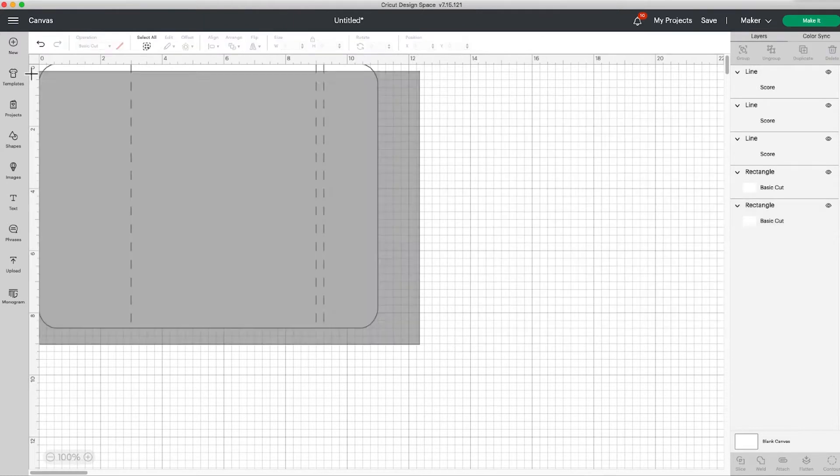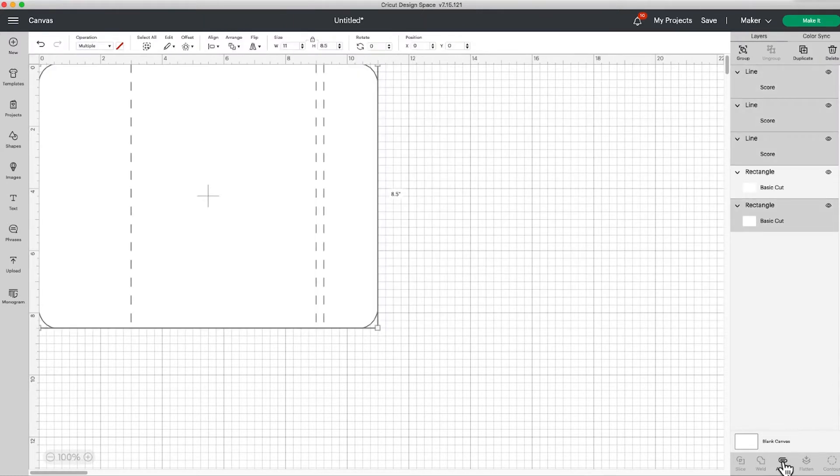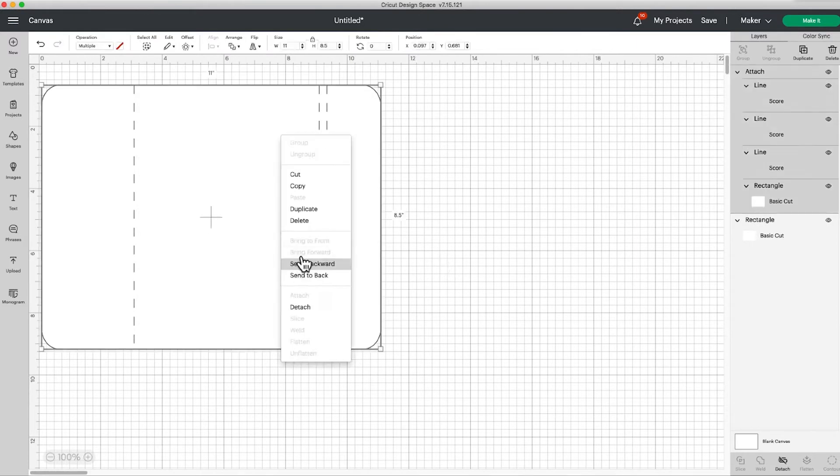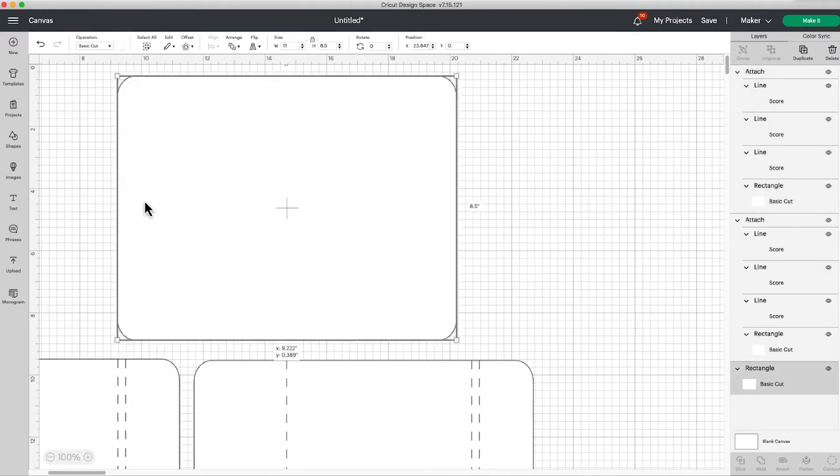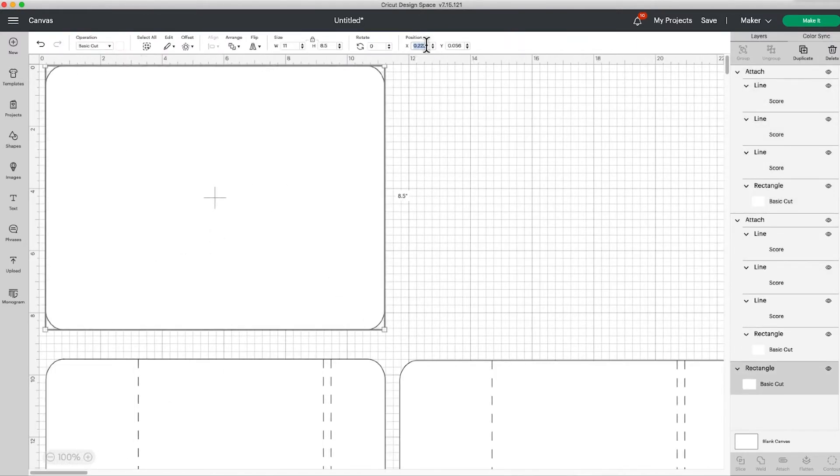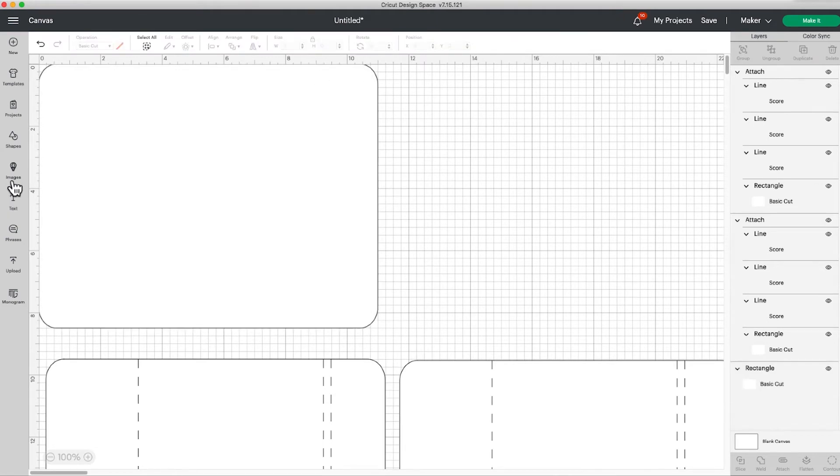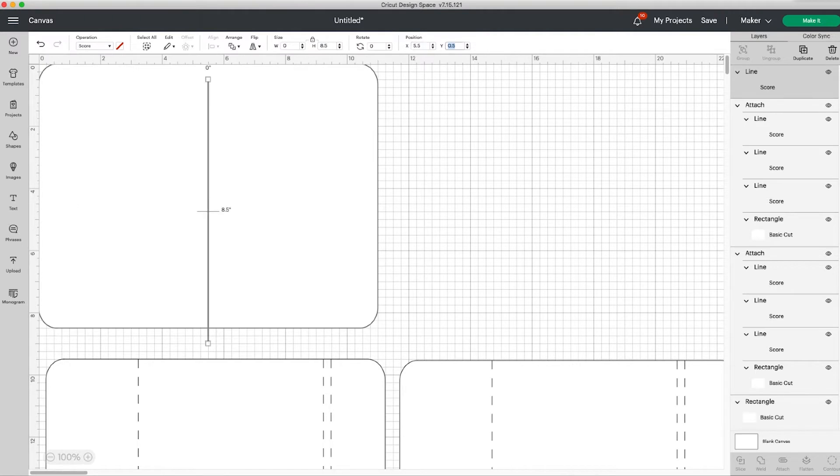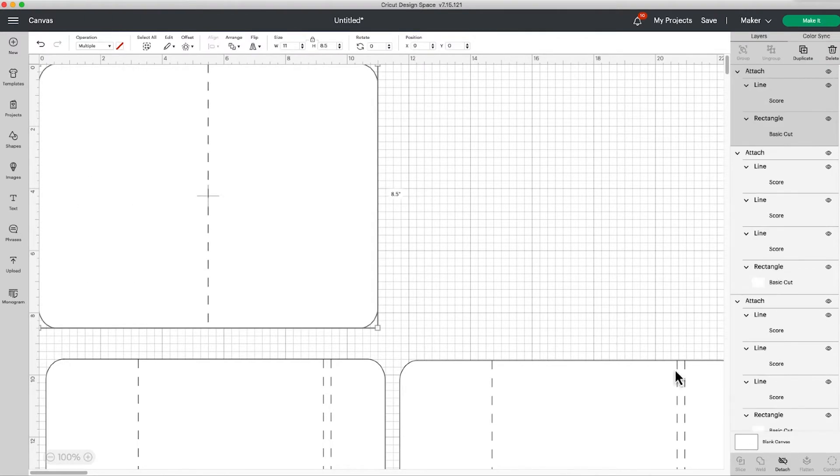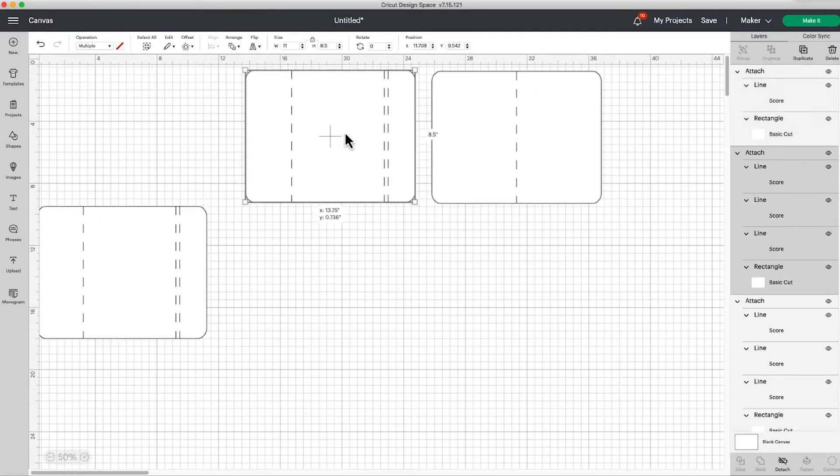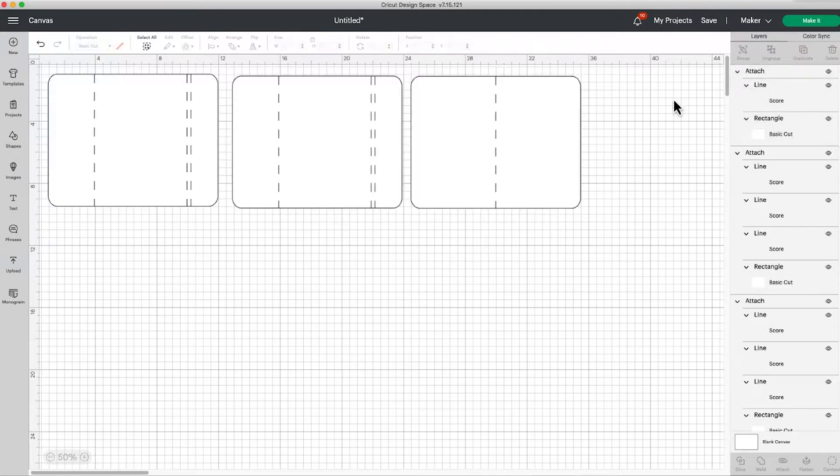And then after I put all the score lines on, the next thing I want to do is attach each of the score lines to those pieces so that Cricut will actually score them with the score tool instead of making a cut line.